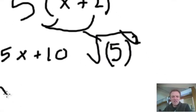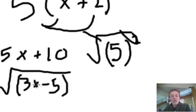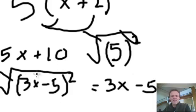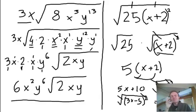Let me do something quickly. What's the square root of (3x−5)²? It's just 3x−5. The squaring and the square root cancel each other — that's a handy little shortcut to remember.